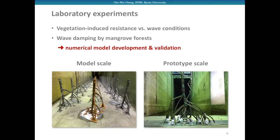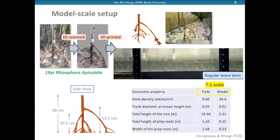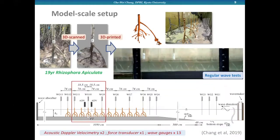For the model scale experiments, to bring something more realistic to the laboratory, we reproduced a complex mangrove root structure using a 3D printer based on 3D scanned images at 1 by 7 scale. Here's the sketch of the experimental setup. We use different equipment like ADVs to measure fluid velocity, a force transducer to measure wave forces, and wave gauges to measure wave evolution along the entire model mangrove forest. Here you can see a video demonstrating the interactions of regular waves with model trees.